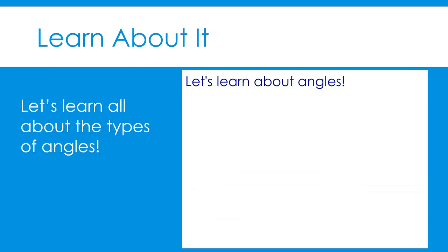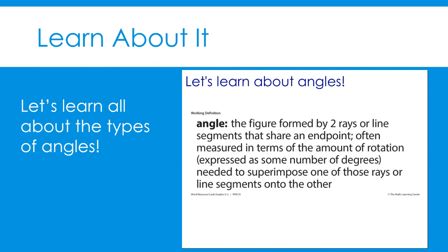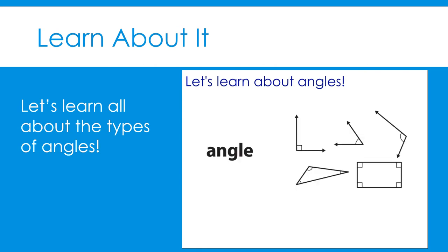Let's learn about angles. What is an angle? Here is the word resource card for angle. An angle is a figure formed by two rays or two line segments that share an endpoint. It's often measured in terms of the amount of rotation needed to superimpose one of those rays or line segments onto another. An exact angle measurement is expressed in a number of degrees. Here are some examples of angles — some formed by two rays, and some formed by two line segments that form vertices of polygons.